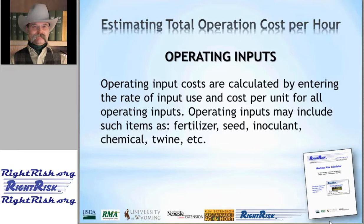Moving beyond the individual machine cost estimate, we now look at total field operation costs on a per-hour basis. We need to estimate costs for a couple of additional items. The first is operating inputs — those inputs used in applying agricultural chemicals, whether seeding, inoculants, fertilizer, twine for baling, or other chemicals used in various field operations. Within the software, we can enter both the use per acre and the cost on a per-unit basis for each input.